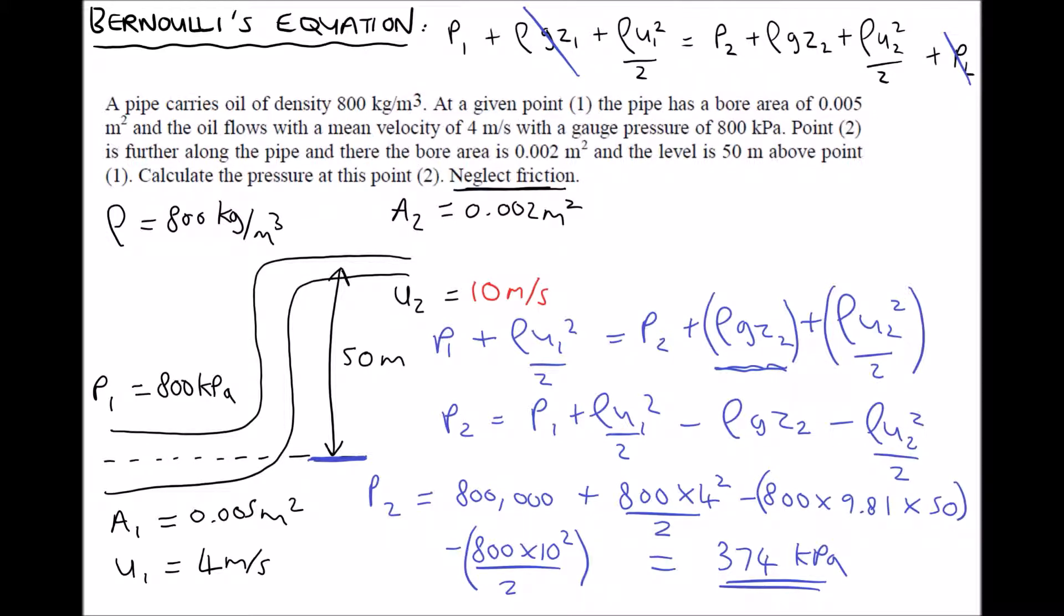So from this example and the earlier example we've seen how we can take a descriptive question in order to produce a sketch of the scenario and once we've produced a sketch of the scenario we can refer back to our Bernoulli's equation and remove the terms that aren't relevant. Finally we can determine the unknown parameters within the fluid system.